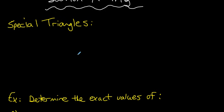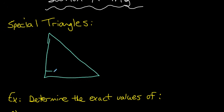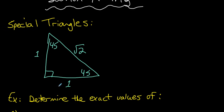In trigonometry you would have learned about special triangles. The first one is the isosceles right triangle — the 45-45-90 triangle. Because it's isosceles, these two sides are the same length. Some people label these sides 1 and 1, then the Pythagorean theorem tells you the hypotenuse is √2. Or you could label them √2 and √2, and the Pythagorean theorem tells you that side is 2.